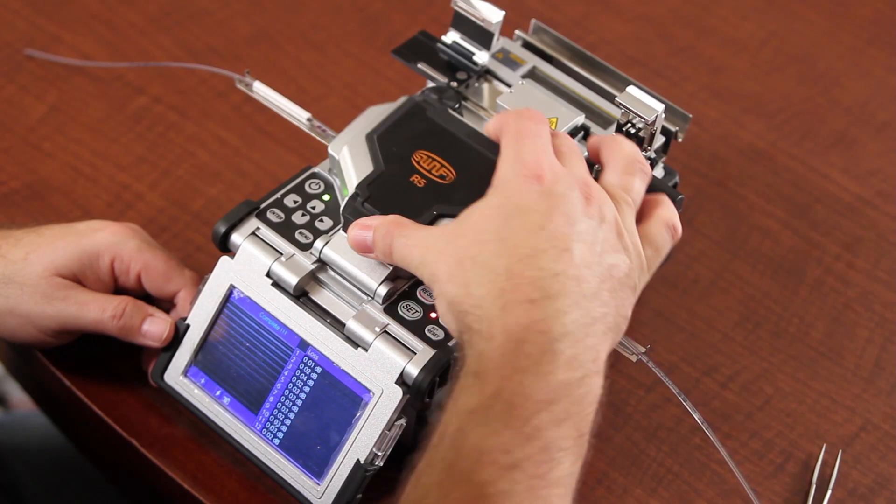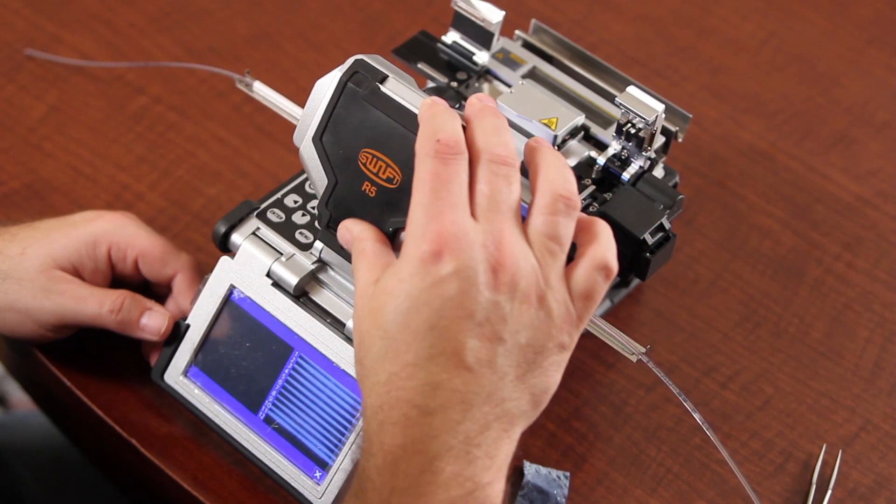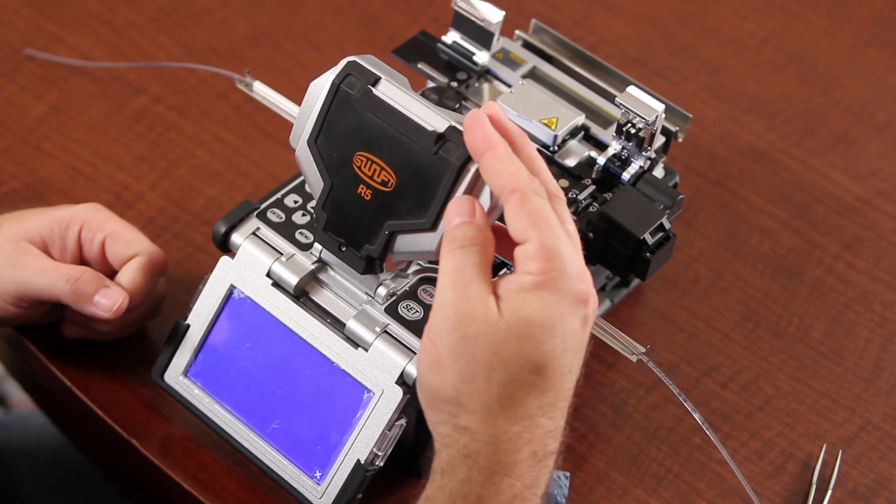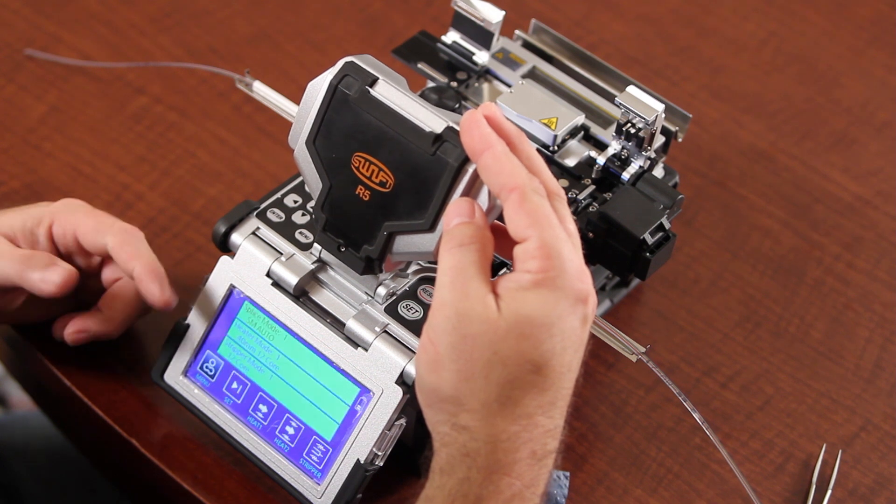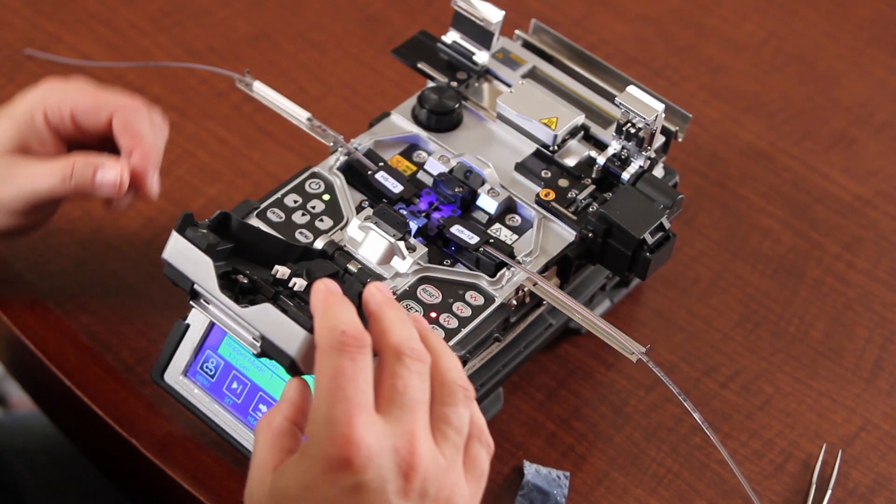Once complete, open your wind cover. Allow the tensile test to be done. Once it comes back to the main screen, open your holders.